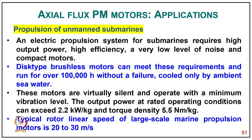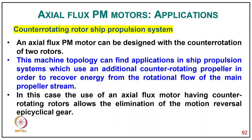Coming to propulsion of manned submarines: the electric propulsion system for submarines requires high output power, high efficiency, very low noise, and compact motors. Disc-type brushless motors can meet these requirements, running over 100,000 hours without failure, cooled only by ambient sea water, and being virtually silent with minimum vibration. The output power-to-weight ratio at greater operating conditions can exceed 2.2 kW/kg, torque density 5.5 N·m/kg, with typical rotor linear speed of large-scale marine propulsion motors of 20 to 30 m/s.